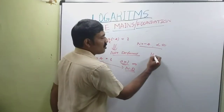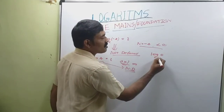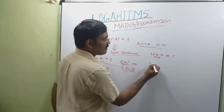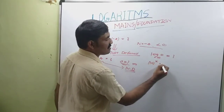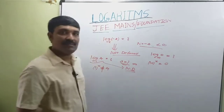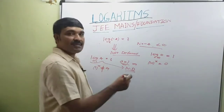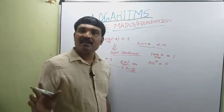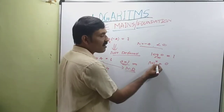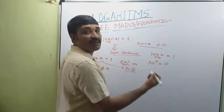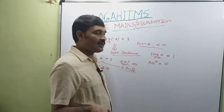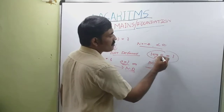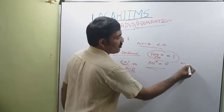Now log of 0 to the base 10. This indicates 10^x = 0. Any real number raised to a power never equals 0 — we can't find an x such that 10^x = 0. So log 0 to the base 10 is not defined.